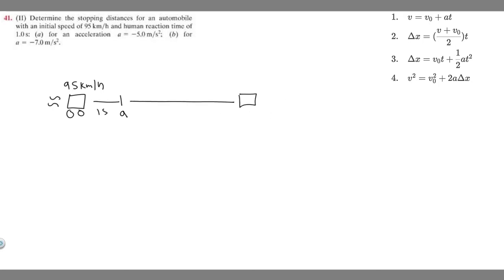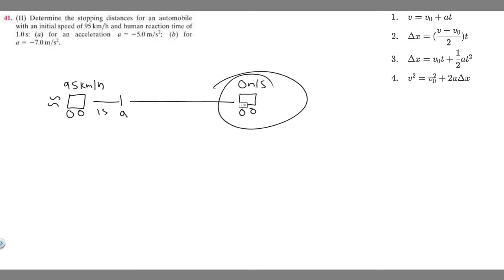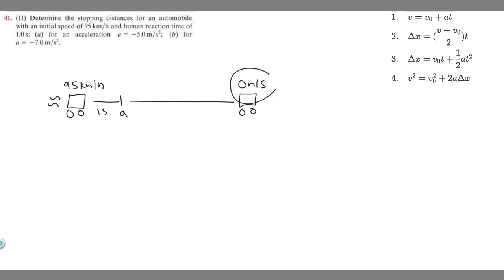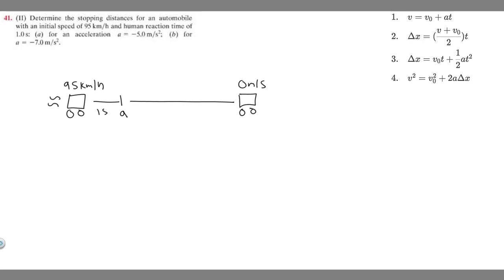The car slows down until it stops completely. At that final point it's traveling at 0 meters per second, because when something is stopped it's not moving. So we're trying to find when it stops, and at the end the velocity is 0 m/s. This is just a rough diagram of what's going on.